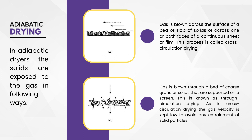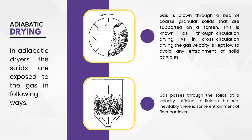Next is through-circulation drying. Imagine you have a bed of coarse granular solids like sand or gravel and you blow gas through them. The gas picks up the moisture from the solids and carries it away — this is through-circulation drying. The gas velocity is kept low in through-circulation drying to avoid entrainment of solid particles. If the gas moves too fast, it picks up and carries away solid particles, making the process inefficient. Controlling gas velocity is therefore critical.